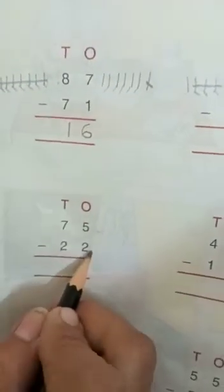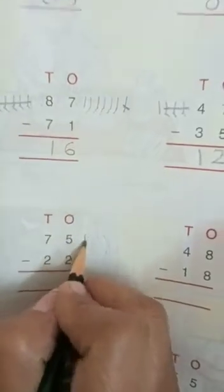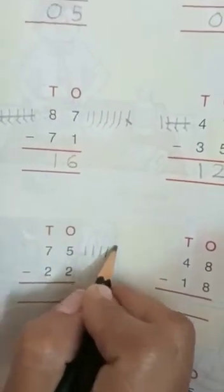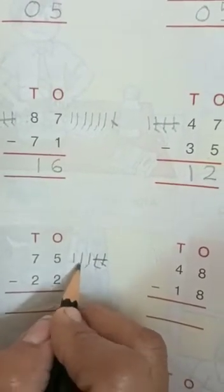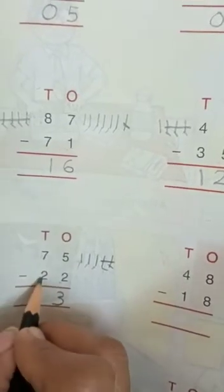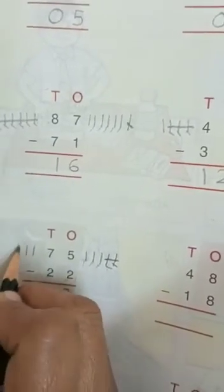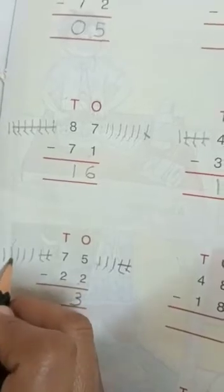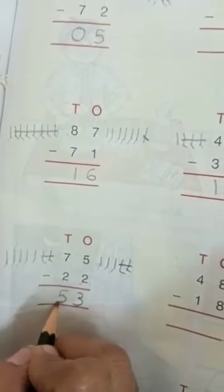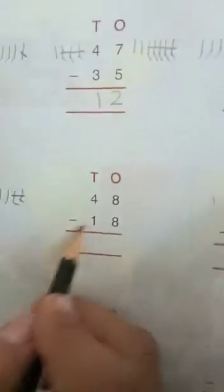Now 75 minus 22: five minus two — one, two, three, four, five — you have to take away two: one, two. How many lines are left? One, two, three. Seven minus two: one, two, three, four, five, six, seven — take away two: one, two. One, two, three, four, five. The answer is fifty-three.